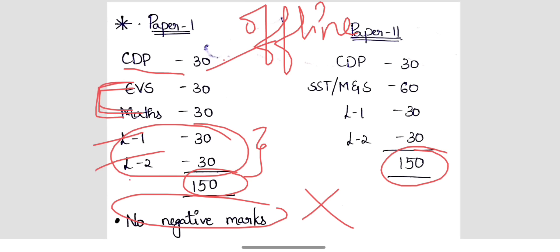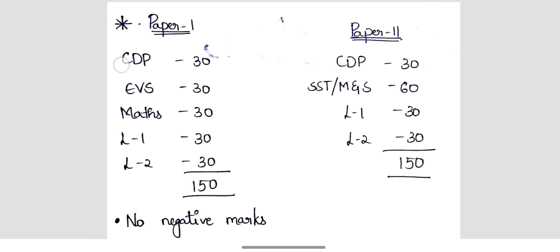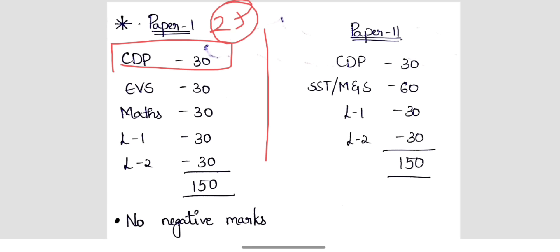We will solve the basic questions. Next, we will solve Paper 2 — first CDP, then the languages, and then the subject. The key point is: first, solve the CDP, and the 30 questions are bubbling. Then you will solve the next subject, and finish that point.